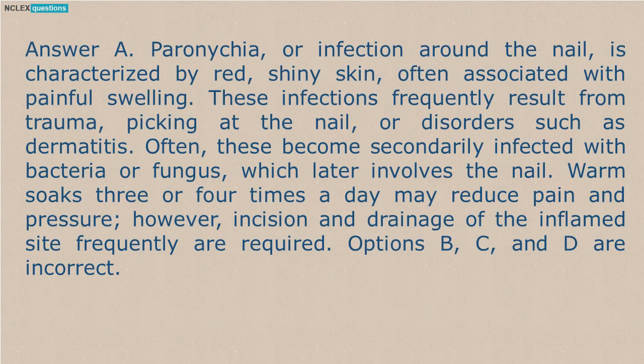Answer A. Paronychia, or infection around the nail, is characterized by red, shiny skin, often associated with painful swelling. These infections frequently result from trauma, picking at the nail, or disorders such as dermatitis. Often, these become secondarily infected with bacteria or fungus, which later involves the nail. Warm soaks three or four times a day may reduce pain and pressure; however, incision and drainage of the inflamed site frequently are required. Options B, C, and D are incorrect.